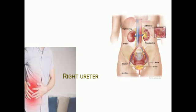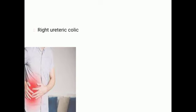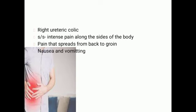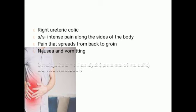Right ureteric colic can also be one of the differential diagnoses, manifesting as intense pain along the sides of the body and pain that spreads from the back to the groin, which is a very characteristic shifting pain, along with nausea and vomiting. Investigations to confirm ureteric colic include urine analysis showing the presence of red cells, and renal ultrasound.